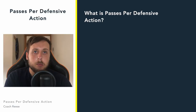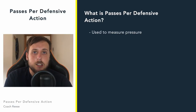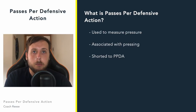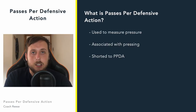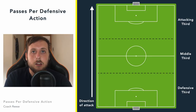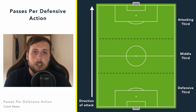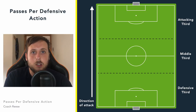Passes per defensive action is used to measure pressure and it's associated with pressing. We'll often see it shortened to PPDA, just to make it easier to read because it is a mouthful. The number that you will see associated with this is the number of passes within a team's defensive third per defensive action. The distance used to calculate will vary — some use the defensive third, some use a distance of around 40 yards.